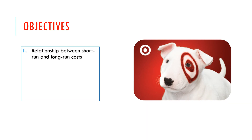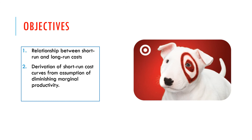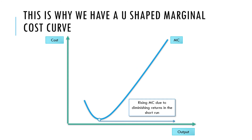Now we tie the assumption about diminishing marginal returns into the impact on costs — this is why we have a U-shaped marginal cost curve. Initially we get increasing returns, so the relative cost of employing each extra worker falls. Then we reach a point where adding each extra worker produces less and less total output, so the relative cost of those workers means the cost of each additional unit starts to rise. We get initially a fall in marginal cost when marginal product is increasing, and then when marginal product starts to fall we get a rise in marginal cost — giving us the U-shaped marginal cost curve.